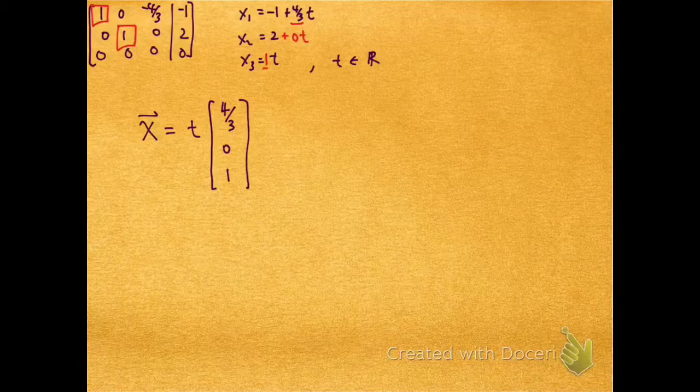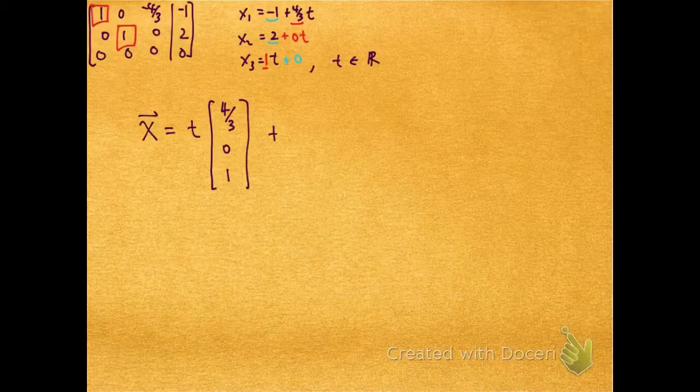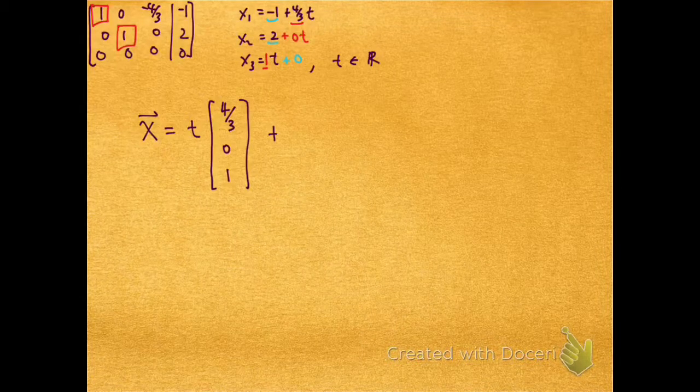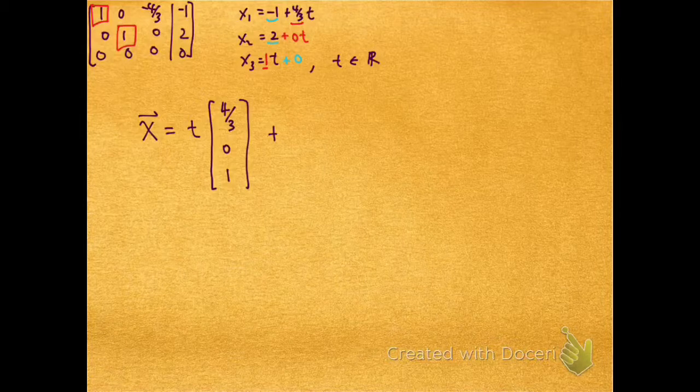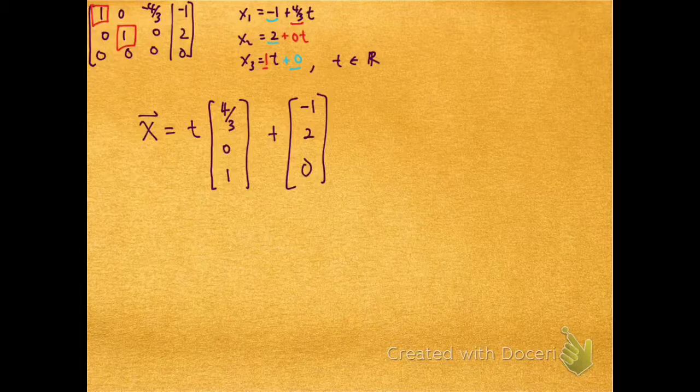So I'm going to grab the coefficients 4/3, 0, 1, plus... well now I'm going to grab all the coefficients that don't have t on them, and so this is a -1, 2, and an implicit plus 0.